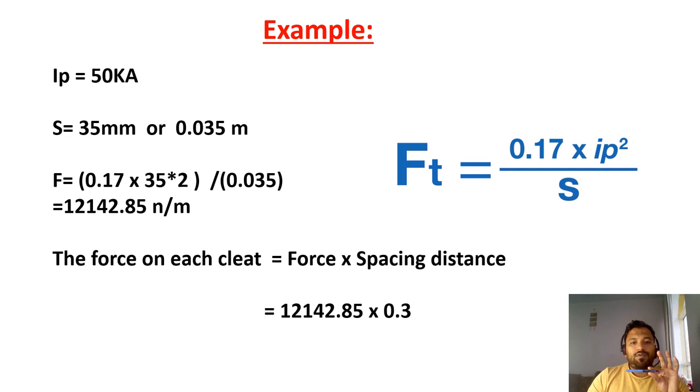Then my force is equal to this value, Ft multiplied by 0.3. 300 mm converted into meter. That is the value we will get, 3642.85 Newtons per cleat. So this is the value we will get, each cleat, how much Newtons required.